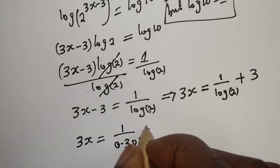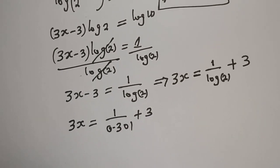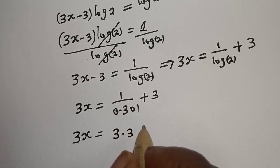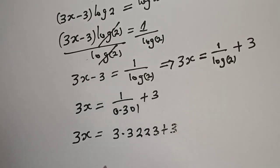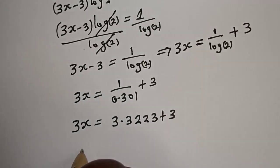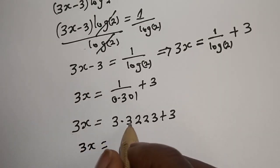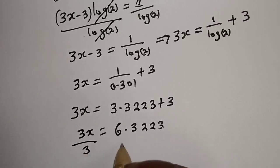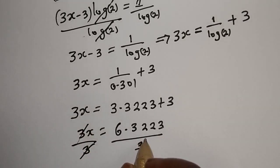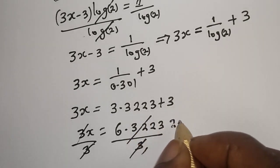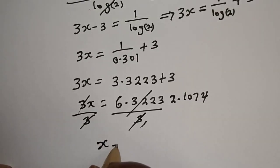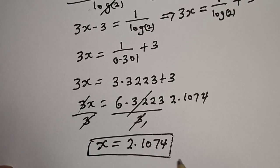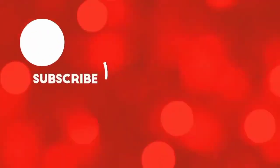1 over log 2 is 0.301, so 3s is equal to 1 divided by 0.301, which is 3.3223, plus 3, giving 6.3223. Now let's divide both sides by 3. s is equal to 2.1074. And this is the final answer. If you enjoyed the class, please don't forget to like, share, comment and subscribe. Thank you.